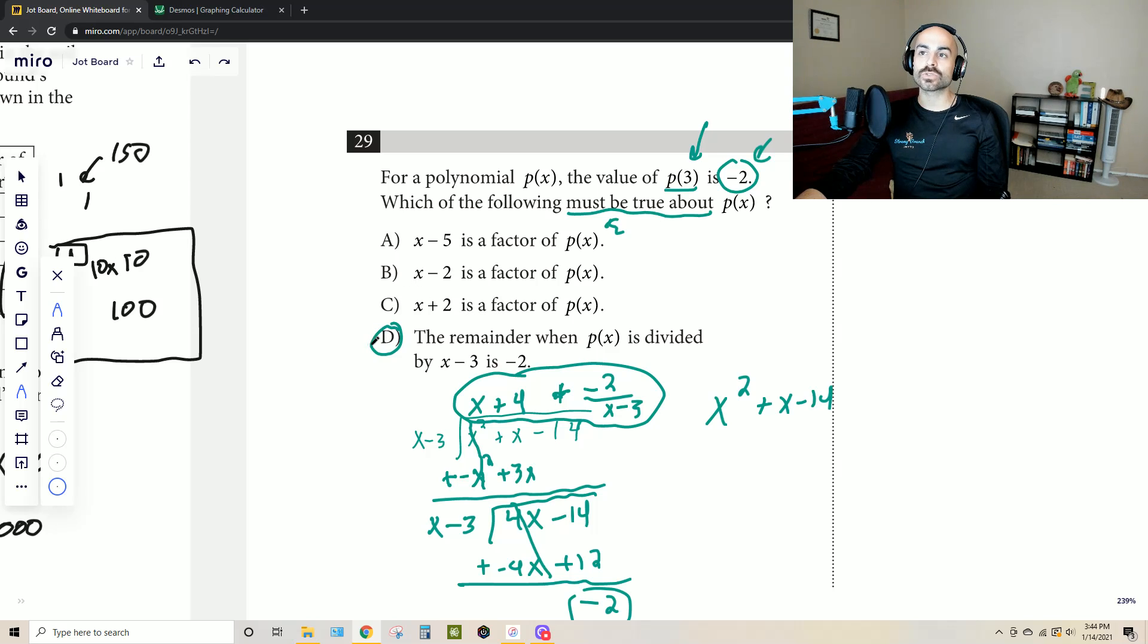So D is true in every sense of any polynomial that we can come up with, whereas A, B, and C will only be true some of the time. And since they're saying must be true, that only leaves D as the correct answer. And yeah, we'll leave it there, good luck on that one.